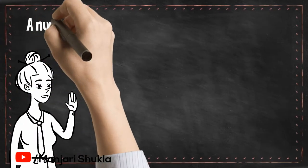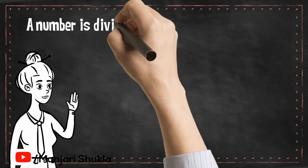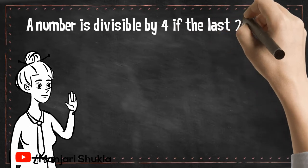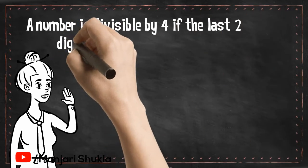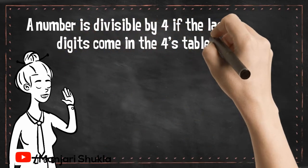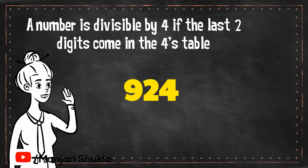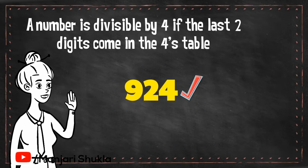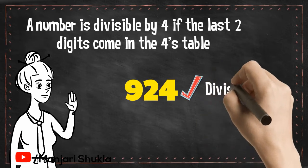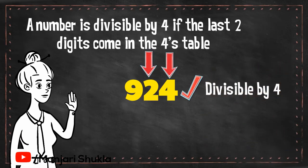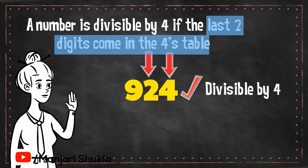Divisibility Rule 4. A number is divisible by 4 if the last 2 digits come in the 4's table. For example, the number 924 is divisible by 4 because 24, the last 2 digits, come in the 4's table.